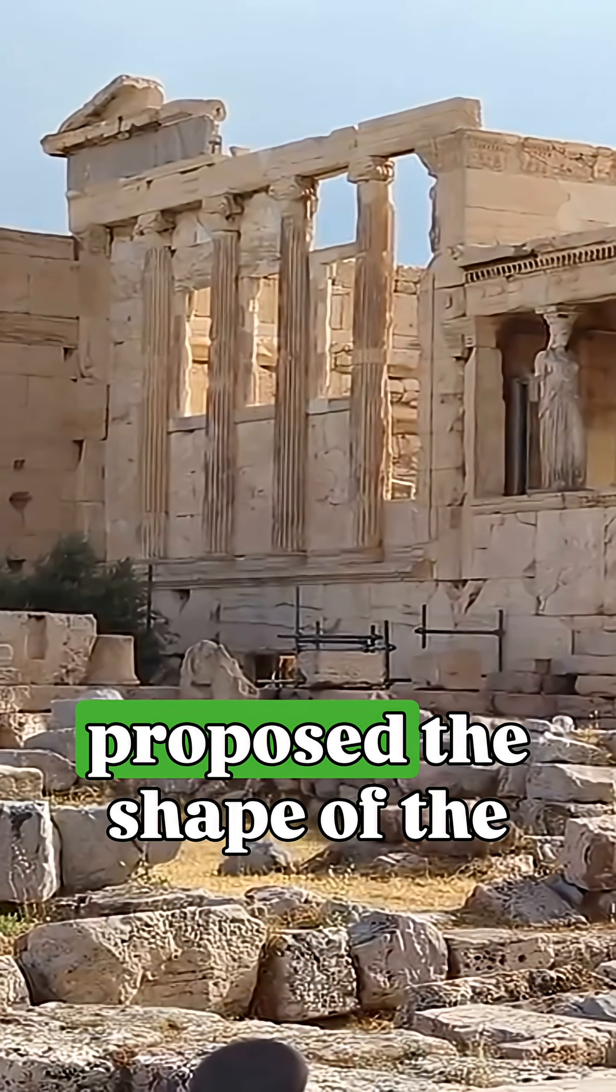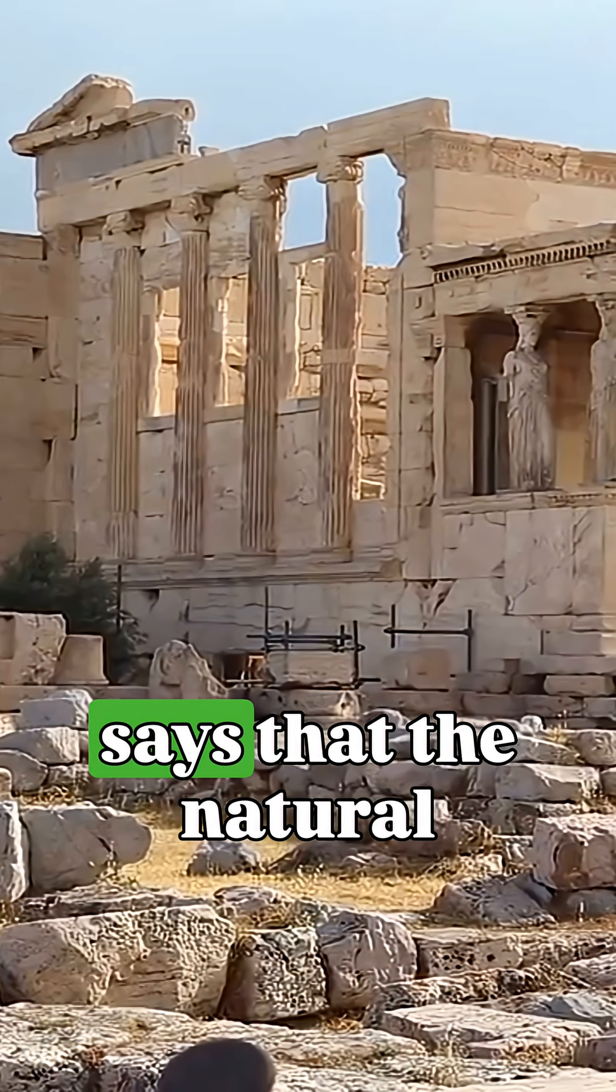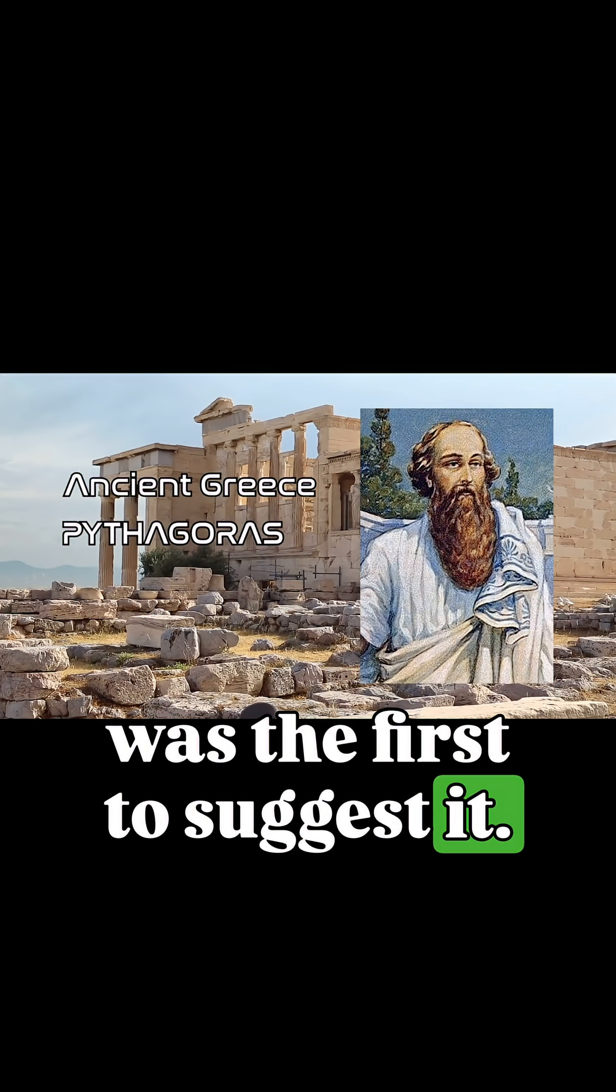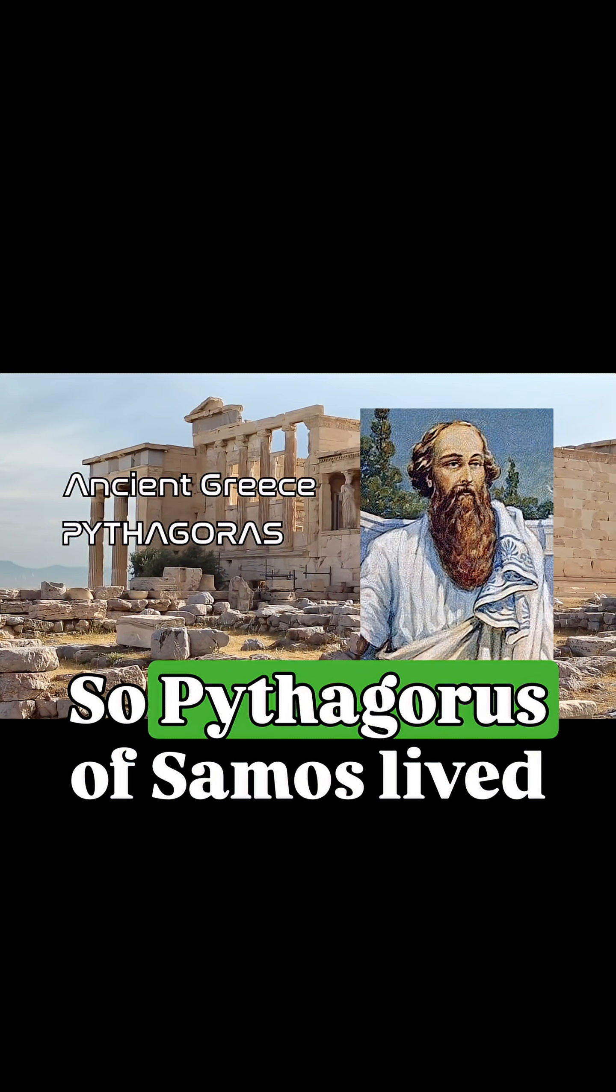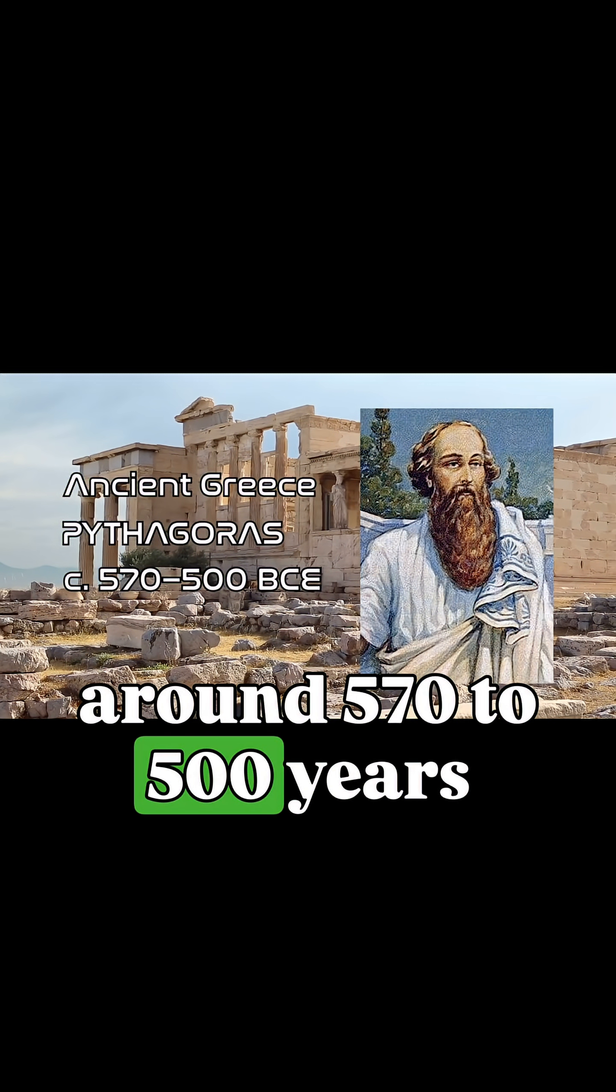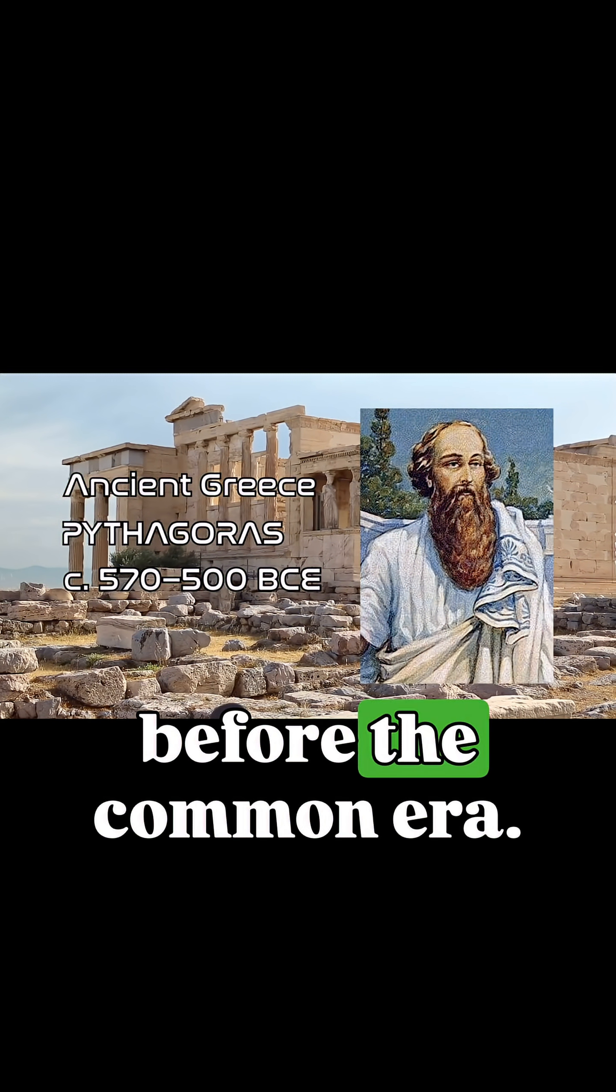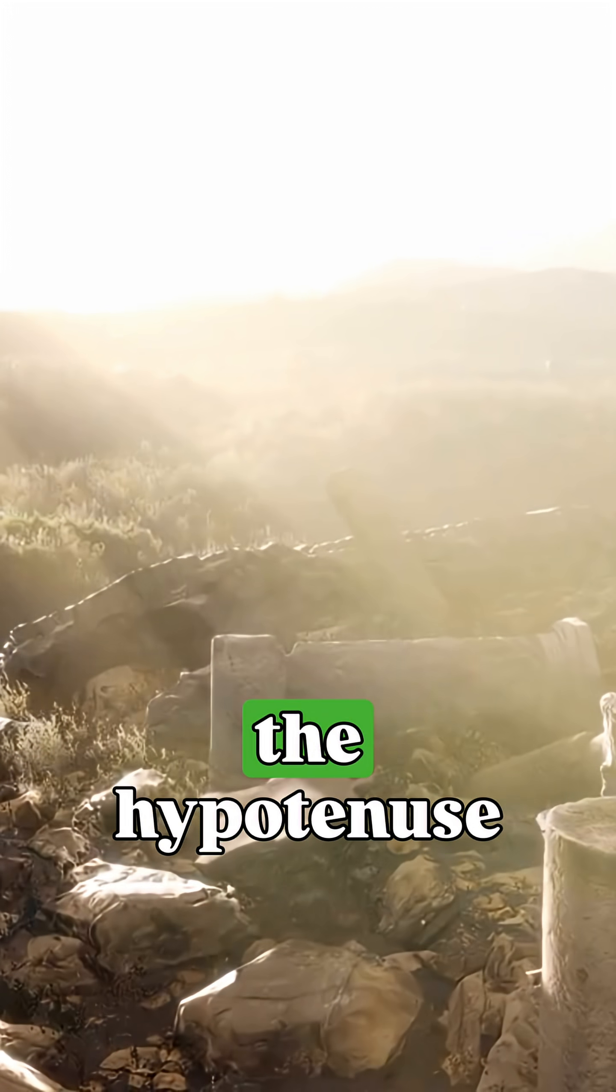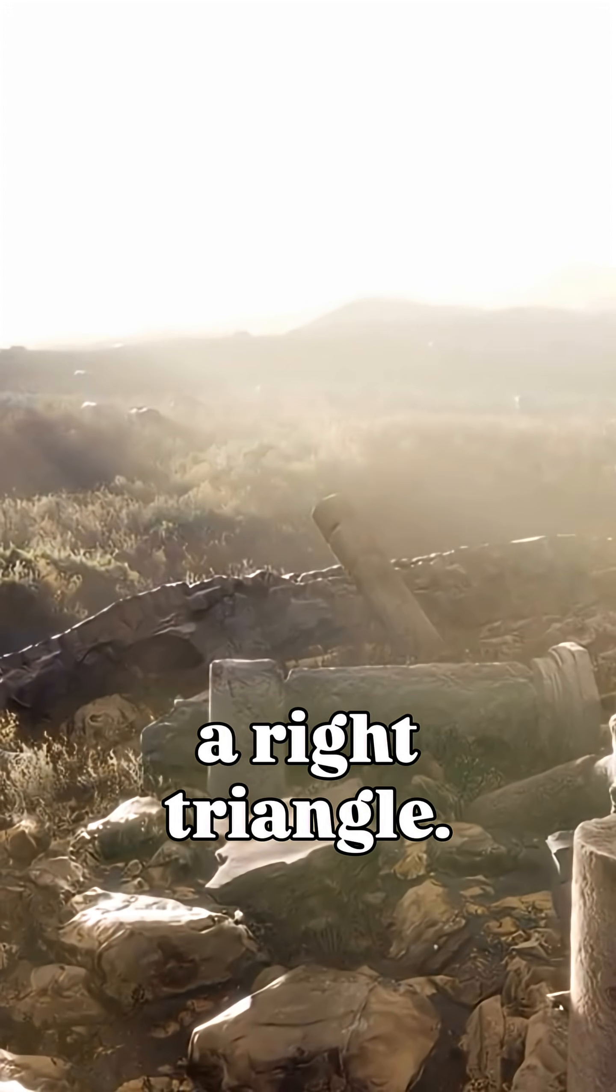One version of the story about who first proposed the shape of the Earth says that the natural philosopher Pythagoras was the first to suggest it. Pythagoras of Samos lived around 570 to 500 years before the Common Era. He is the author of the famous theorem about the hypotenuse and the legs of a right triangle.